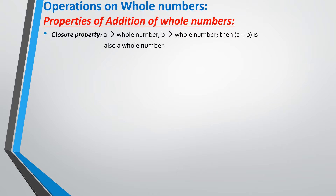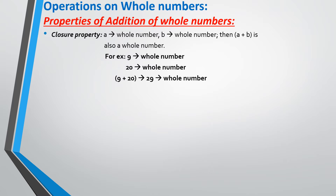What is the closure property? When A is a whole number and B is a whole number, then the sum of A and B is also a whole number. With an example: 9 is a whole number, 20 is a whole number. When I add 9 and 20, my final answer 29 is also a whole number. This is the closure property.